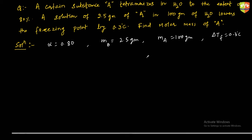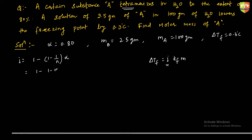This is a case of association — tetramerization — so i = 1 − (1 − 1/n) × α. Here n = 4, so i = 1 − (1 − 0.25) × 0.80 = 1 − 0.75 × 0.80 = 1 − 0.60 = 0.40.